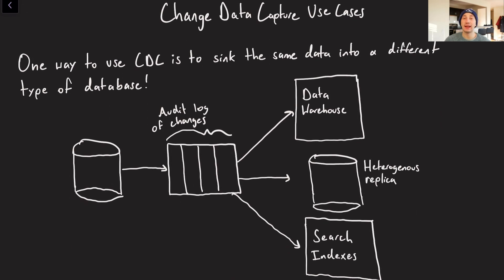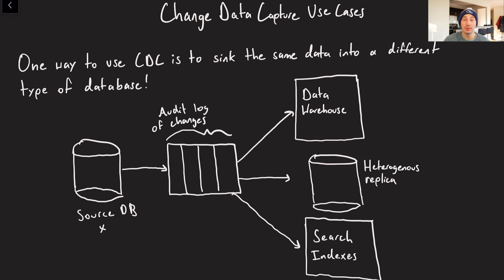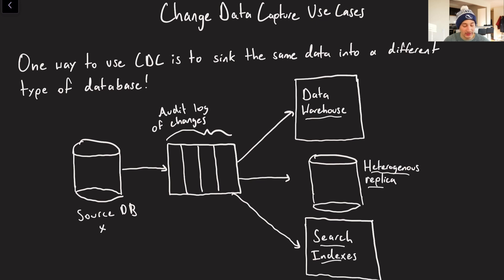Let's go over a few use cases for change data capture. One way to use CDC is to take data in one source database of type X and put it in a database of type Y. This is useful because a lot of the time it's going to optimize reads — if all your writes go to a write-optimized database, you can have eventual consistency between your source database and your reading databases and serve reads better. This applies to something like a data warehouse or data lakehouse where you can take advantage of column-oriented storage and compression, or a heterogeneous replica where your writing database uses an LSM tree and your reading database uses B-trees or B-plus trees. For search indexes, inverted indexes are going to speed up reads quite a bit.